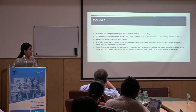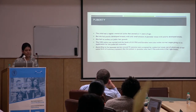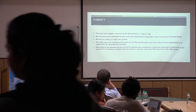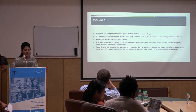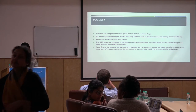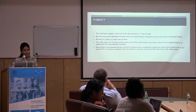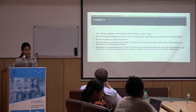Regarding puberty, this child had regular menstrual cycles starting at 11 years of age, but she had poorly developed breasts with only a small amount of glandular tissue and poorly developed areola. No axillary or pubic hair growth was seen in this patient. The ultrasound pelvis was normal, and the levels of LH, FSH, and estrogen were also within normal ranges. Therefore, we were left with no explanation for the pubertal abnormality.